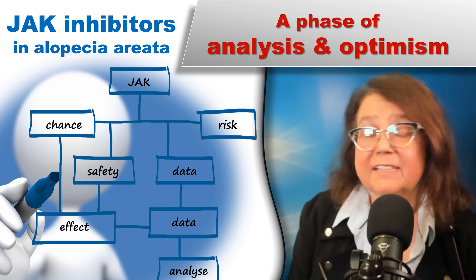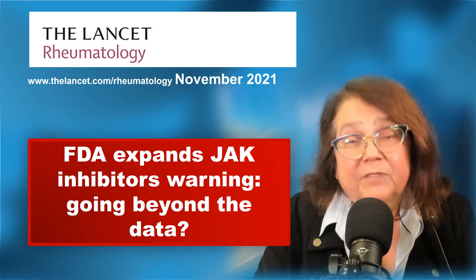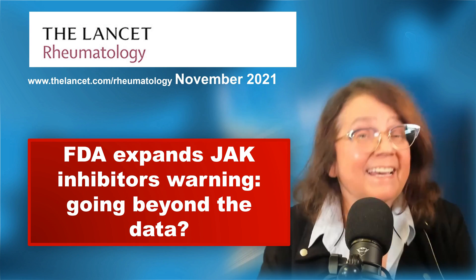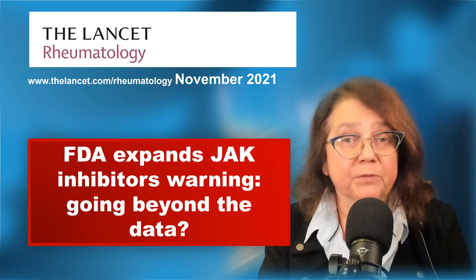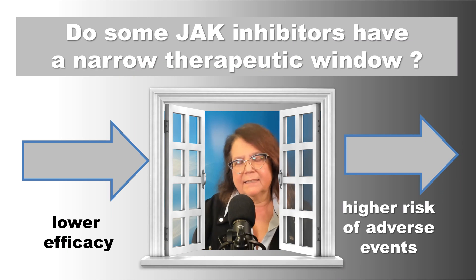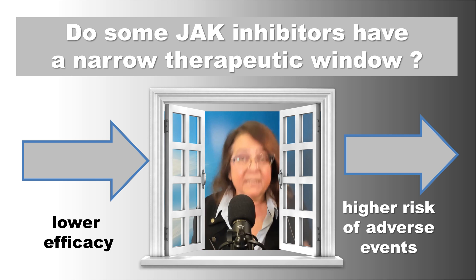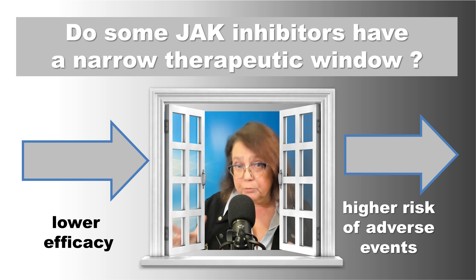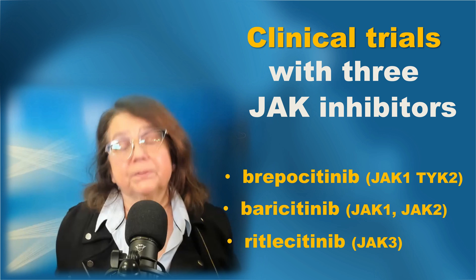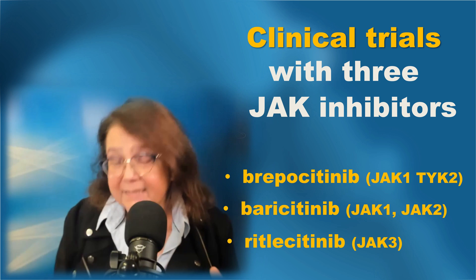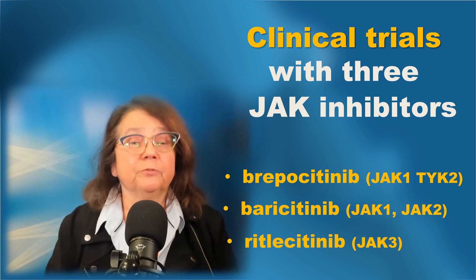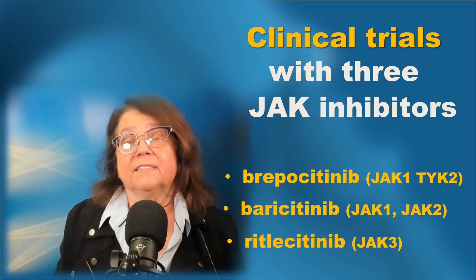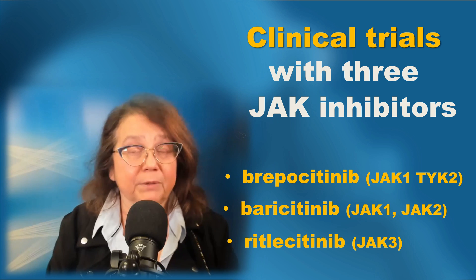The phase of concern was followed by more in-depth analysis and some optimism. Some experts did not share the FDA's point of view and indicated there may not have been sufficient grounds for such a warning. It is possible that some JAK inhibitors will have a narrow therapeutic window — if the dose is lower than optimal there will be no efficacy, and if higher there will be increased adverse events. There are no head-to-head data to compare the three drugs currently in development for alopecia areata, but based on available data, my personal feeling is that brepocitinib may offer the highest efficacy, though studies are ongoing.